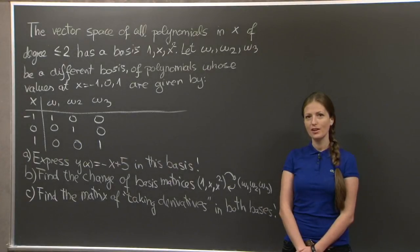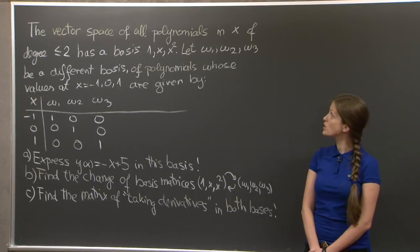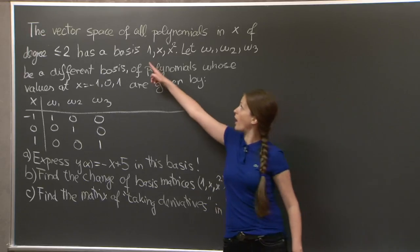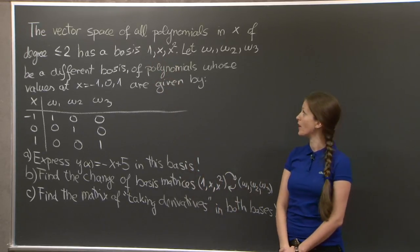Hi, welcome to recitation. Today's problem is about change of basis. The vector space of polynomials in x of degree up to 2 has a basis 1, x, and x squared. That's the obvious basis that you would write for that vector space.